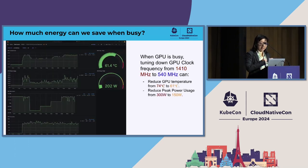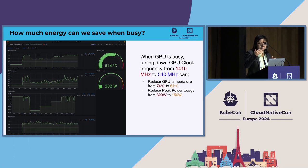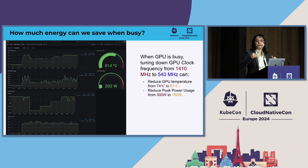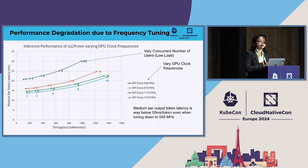Under load — sending 16 concurrent requests to the LM serving engine — tuning down the frequency reduced temperature from 74°C to 61°C. You can imagine how much cooling cost you can save. It also reduced peak power usage from 300 watts to 150 watts. But what happens to latency and throughput when we tune down frequency and requests come in?